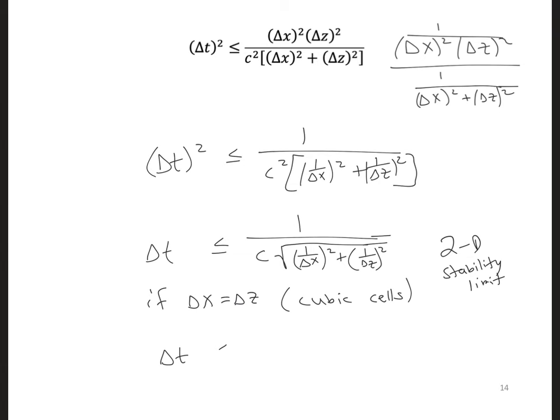We can say delta t has to be less than or equal to delta over c squared of 2, which is the same as a one-dimensional stability limit, except we just have this added square root of 2 in the denominator.